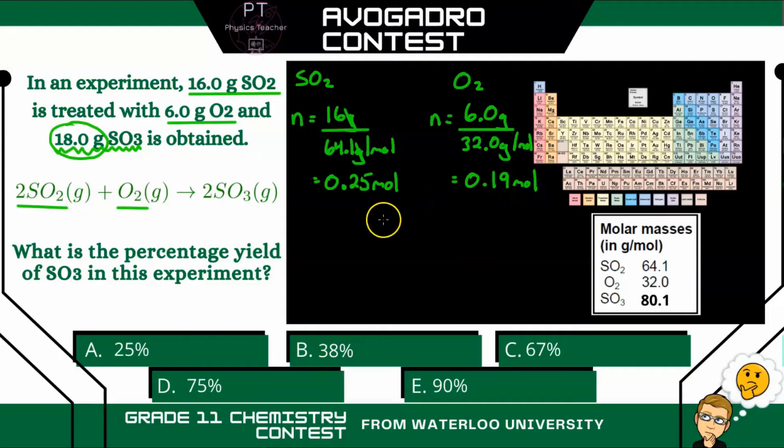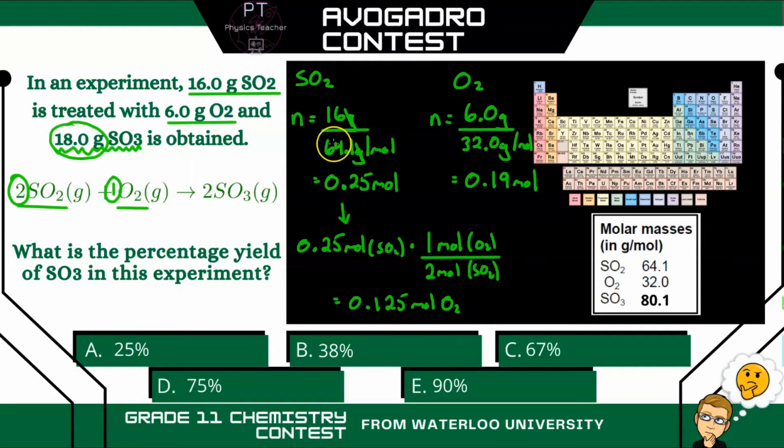All right, so which one is the limiting reagent? So let's start with SO2. And what we're going to do is use our coefficients here, 2 and 1, to determine how much moles of oxygen is required to react with 0.25 moles of SO2. So 0.25 moles of SO2, and we multiply by the ratio of those coefficients. So 1 mole of oxygen divided by 2 moles of SO2, and that is going to give us 0.125 moles of oxygen. So 0.25 moles of SO2 requires 0.125 moles of O2, but we have 0.19 moles of O2. So we have more than enough oxygen, meaning SO2 is our limiting reagent.